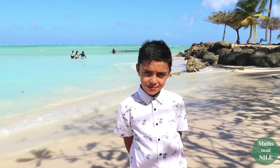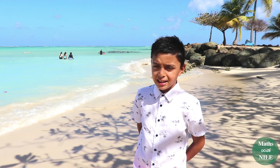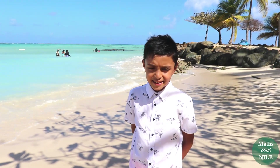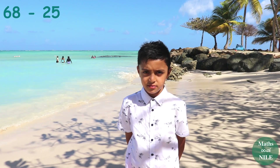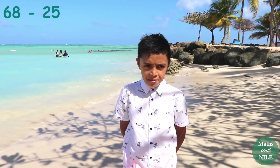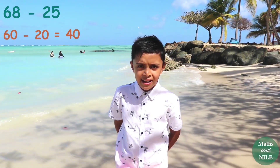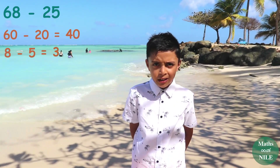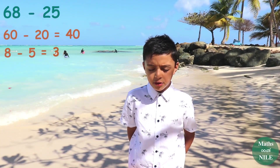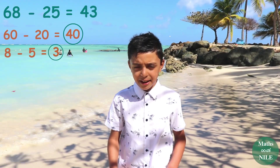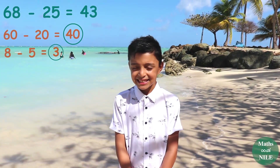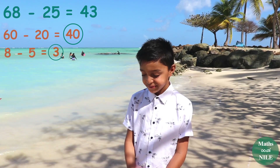Now let's do a couple of subtraction questions. Can we do 68 take away 25? So we do 60 take away 20, which is 40. And then we do 8 take away 5, which is 3. So that means 40 plus 3 is 43. So the answer is 43. Brilliant, Niall. Good job.